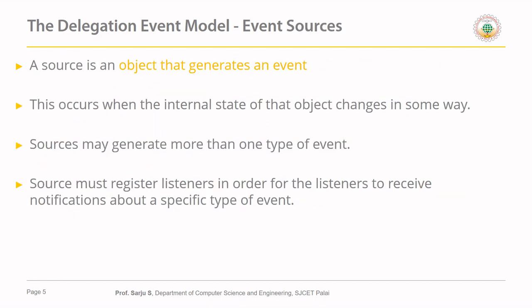The second component is the event source. A source is an object that generates an event — in our example, the button is the source because clicking it generates an event. This occurs when the internal state of the object changes. Sources may generate more than one type of event; for example, a mouse can generate left-click, right-click, scroll, movement, and dragging events. All event listeners must register with the source — only then will a listener be notified when a particular event occurs.